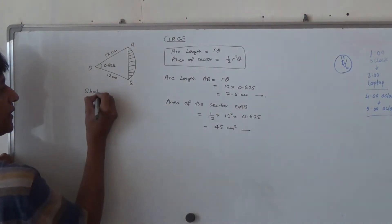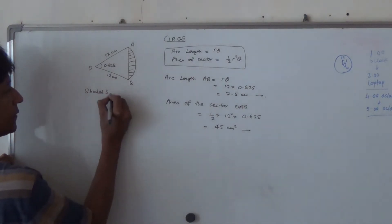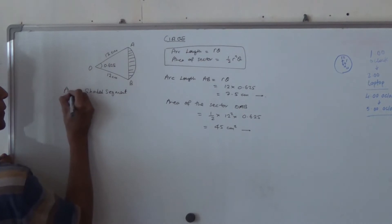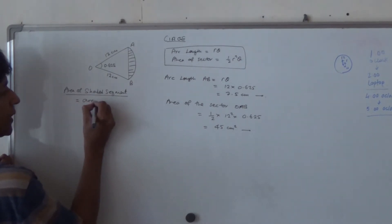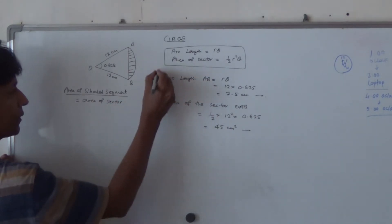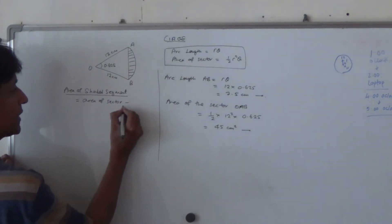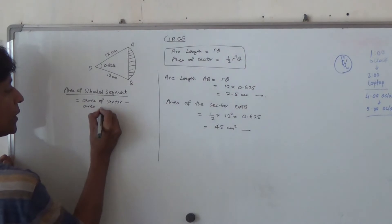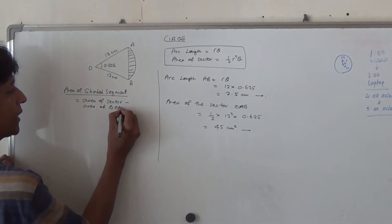The shaded segment, area of the shaded segment is going to be equal to area of the sector minus area of triangle OAB.